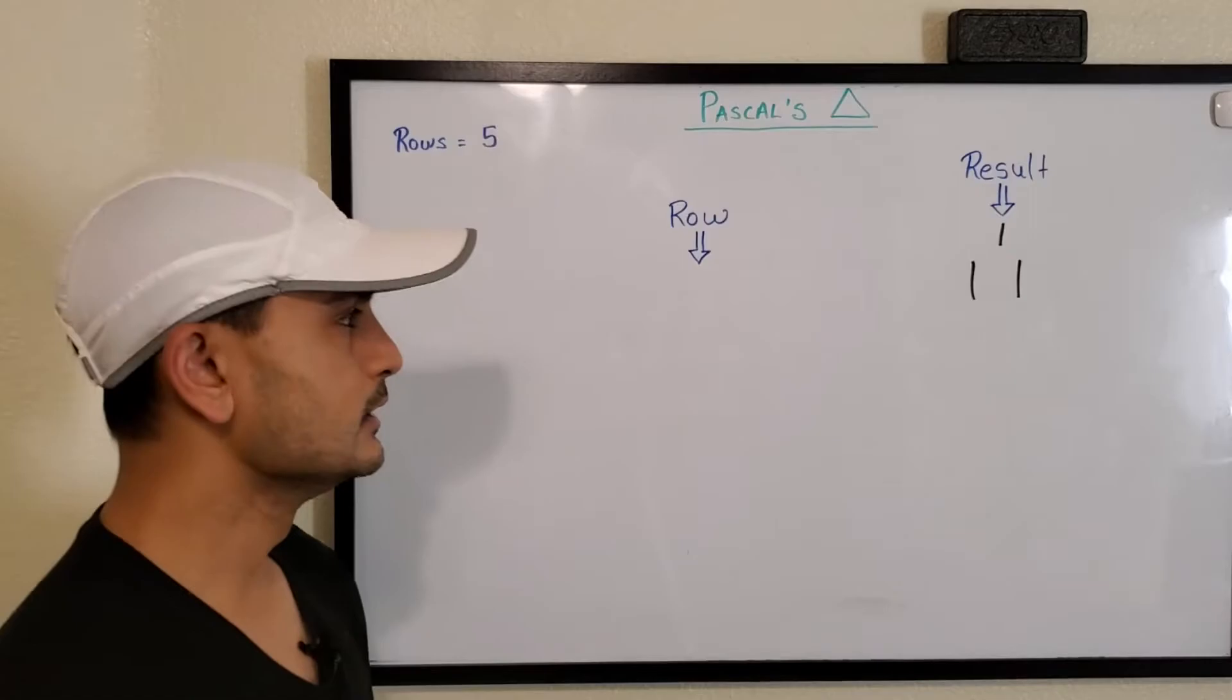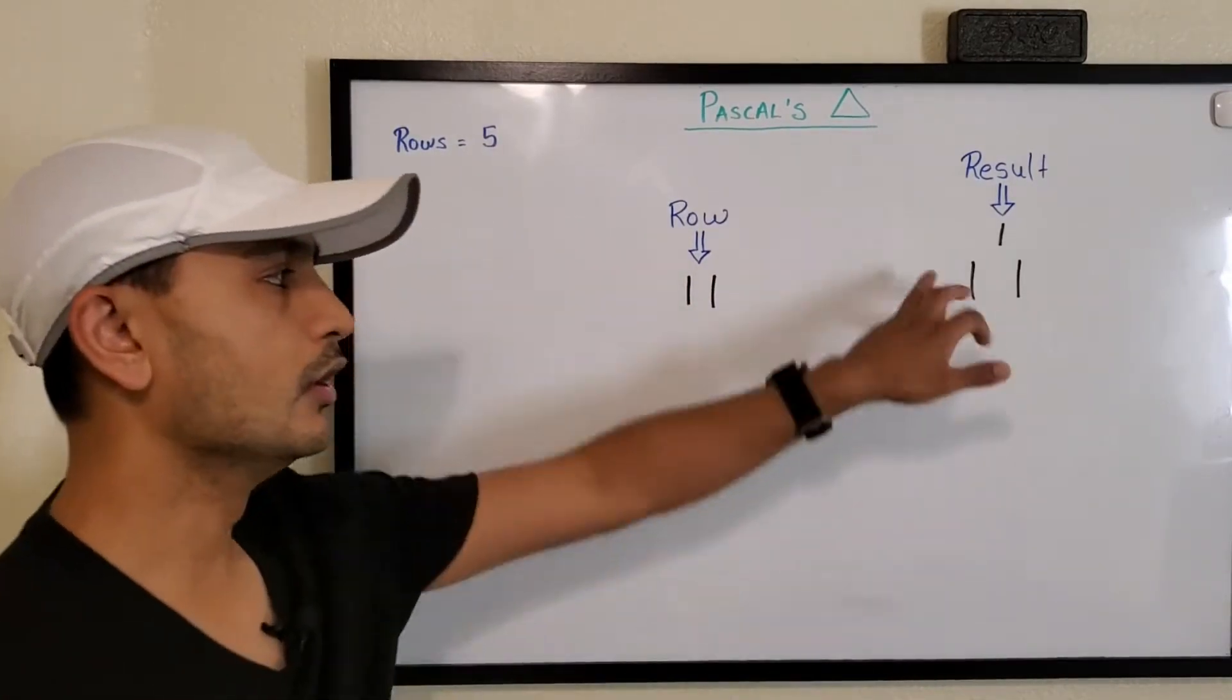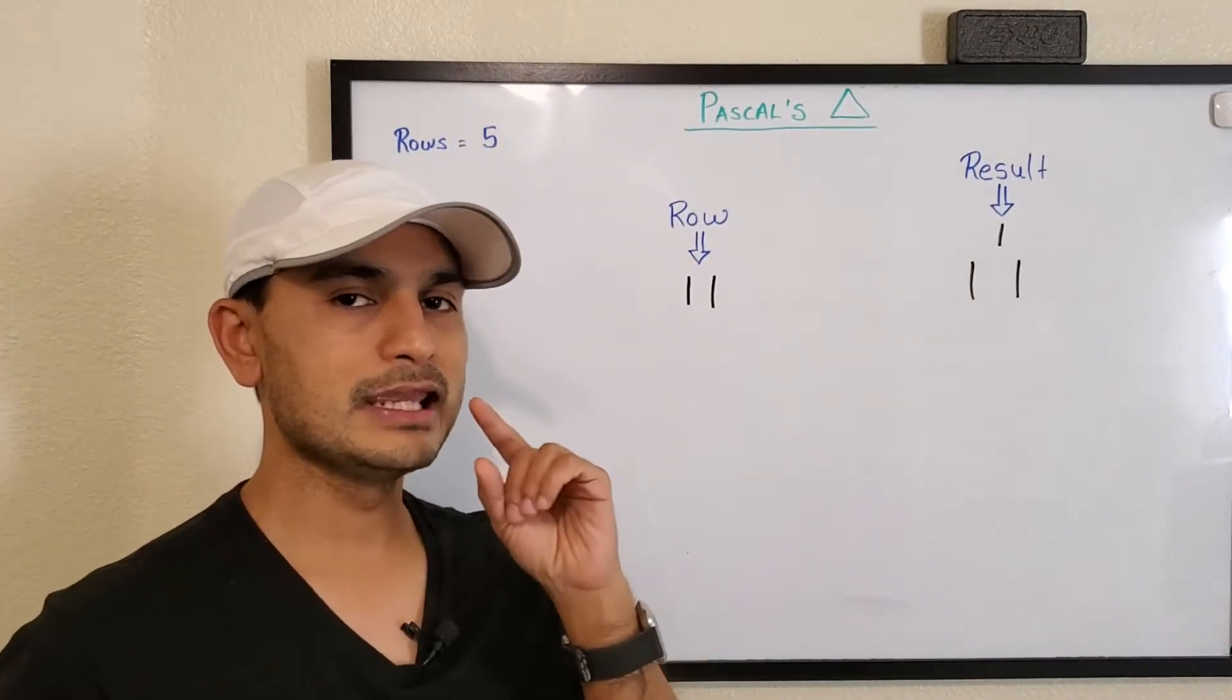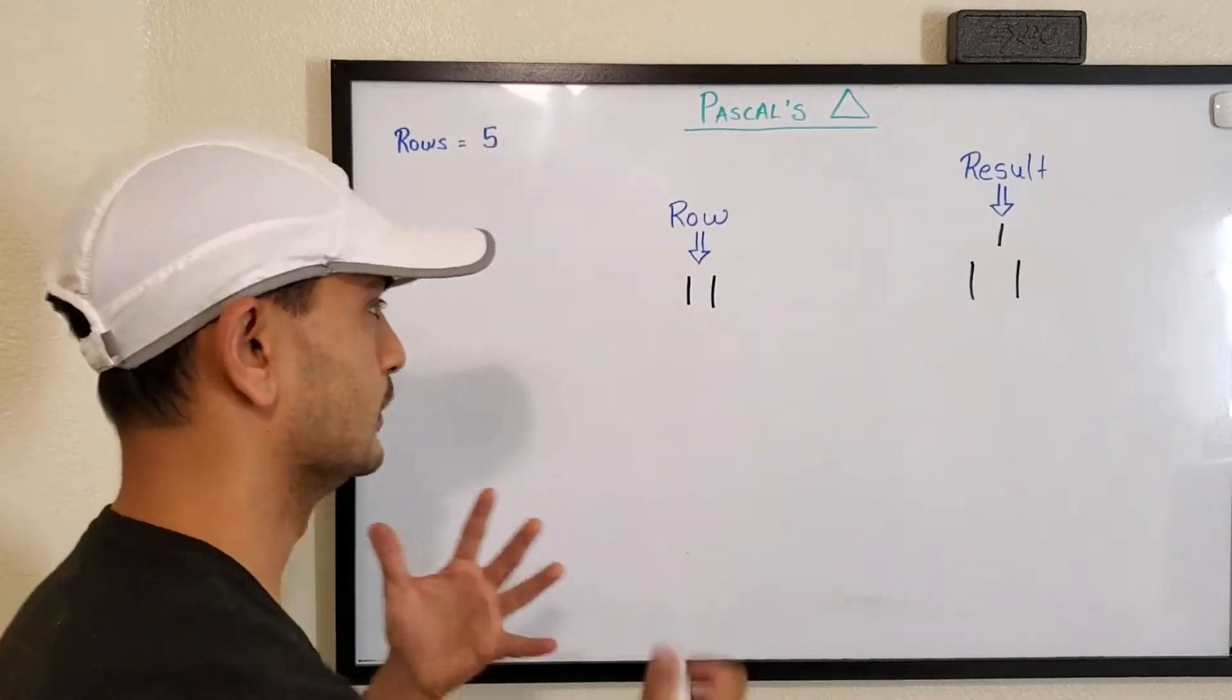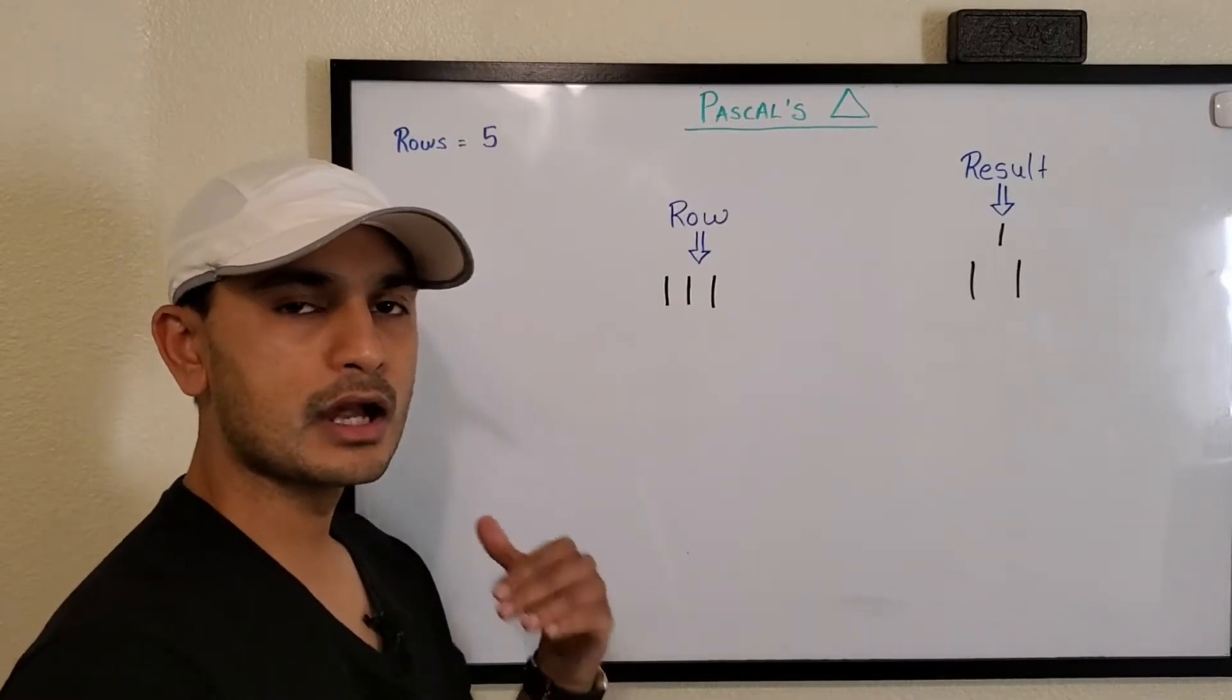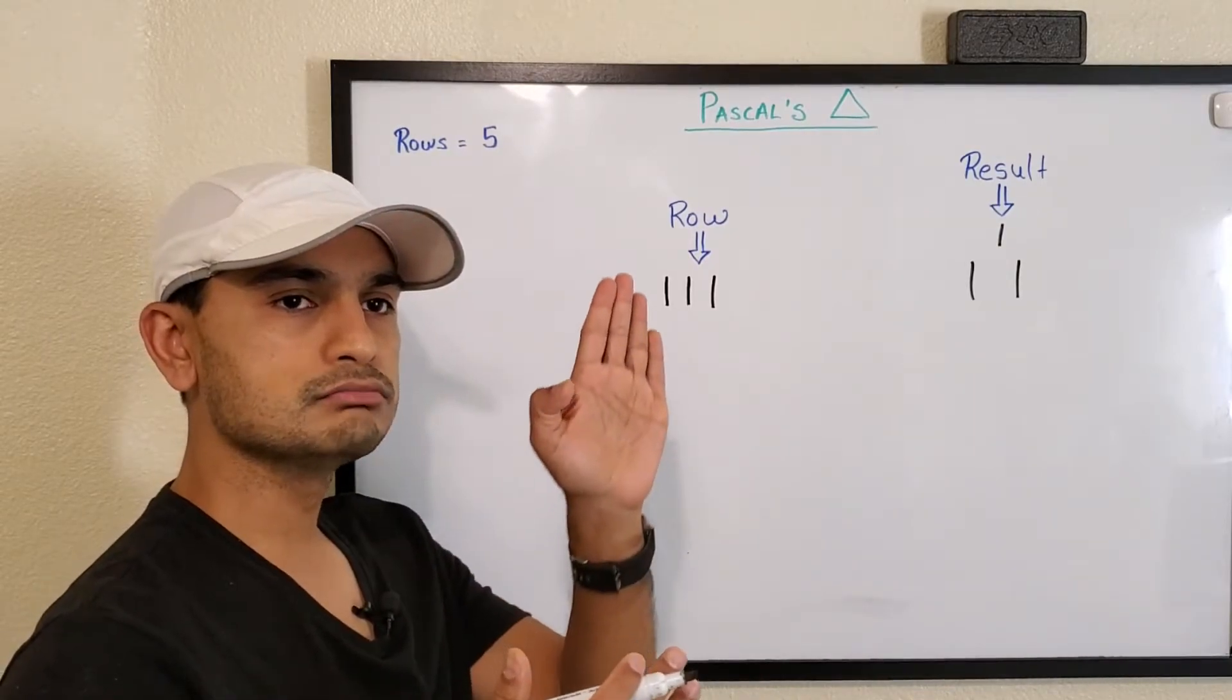Now what we do is we take the current row or the previous row in our row variable and what we do is we insert one more one at the start. So let's do that. We did that.